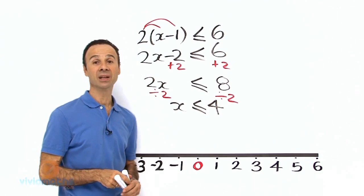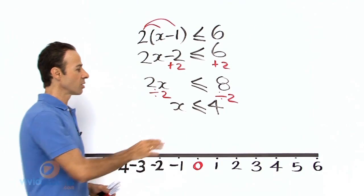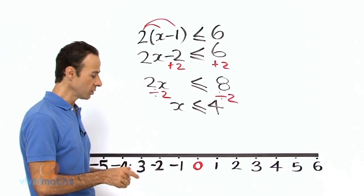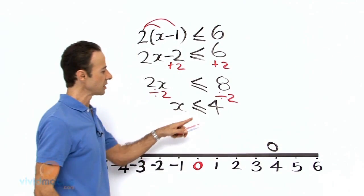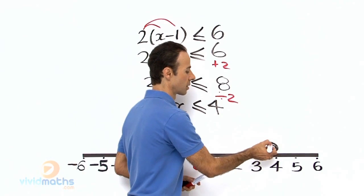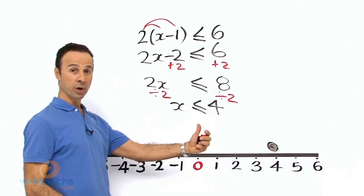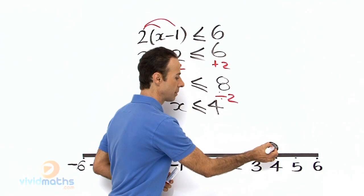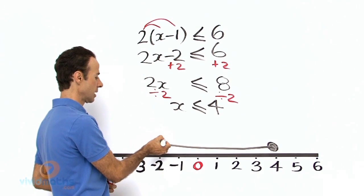Now that we have the solution, we can graph it on the number line. As you can see below me, we go to 4, that is a positive 4. Now it is less than or equal to, so it is going to be a solid circle, and less than is pointing to the left, so we draw the number line like that.